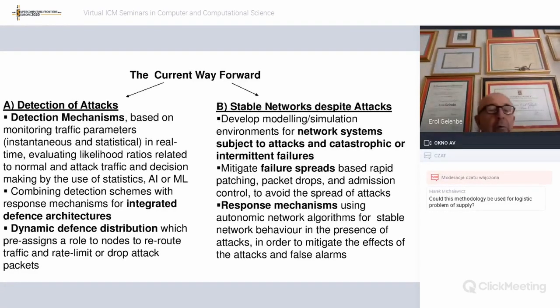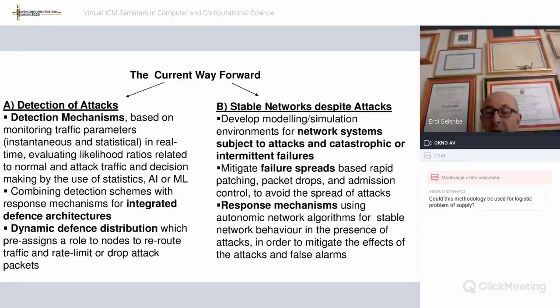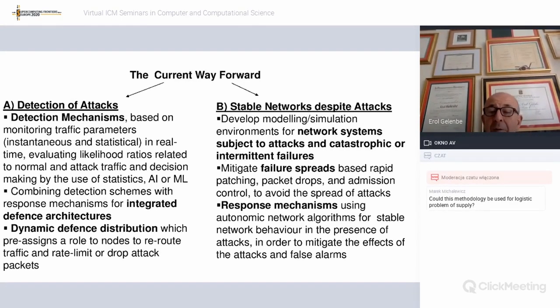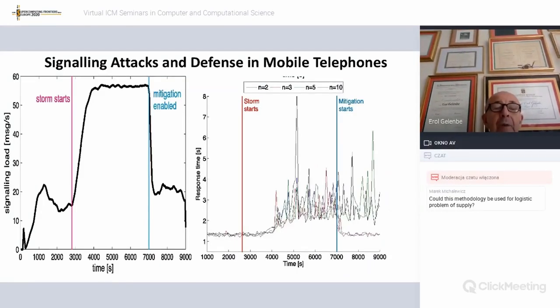The counterpart is to create stable networks. When I use the term networks in a global way, a network has data centers, clouds, fog components, servers, routers, base stations. We want to create stable networks despite the attacks that are happening. We have to have response mechanisms which are basically autonomic, which are not based on someone deciding, but which are built into the system and which react dynamically to attacks.